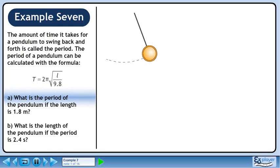The amount of time it takes for a pendulum to swing back and forth is called the period. The period of a pendulum can be calculated with the formula T equals 2π times the square root of l over 9.8.